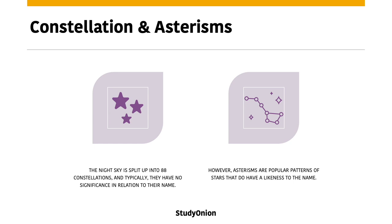The entire night sky is split up into 88 official constellations, and typically constellations have no significance in relation to their name. However, asterisms are a popular pattern of stars that do have a likeness to their names. You might be asking: what is the definition of a constellation versus an asterism?